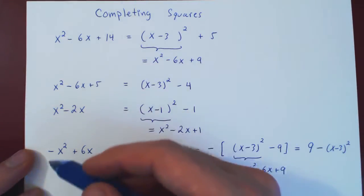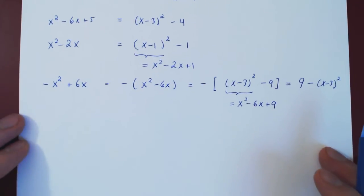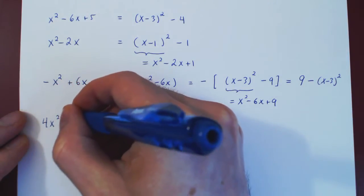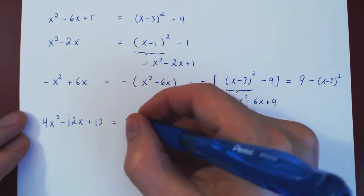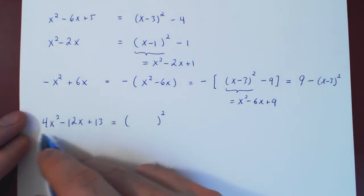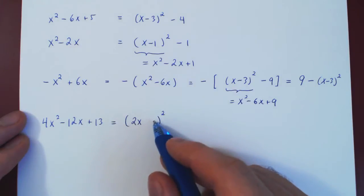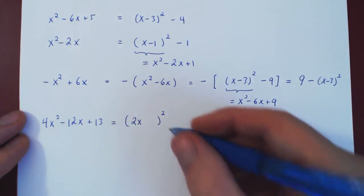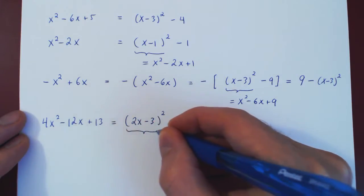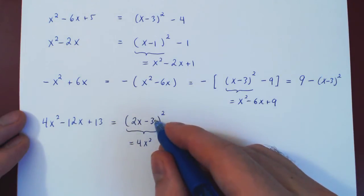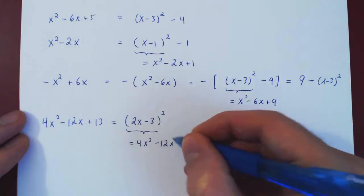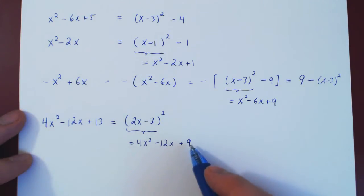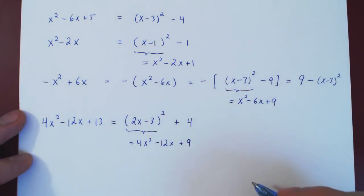So far we've only had 1 or negative 1 as the leading coefficient. What if we looked at 4x squared minus 12x plus 13? What squared gives us 4x squared? That's 2x. So every term here is multiplied by 2. Half of 12 is 6, and half of 6 is 3, so we go with negative 3, giving us 2x minus 3 squared. Expanding: 4x squared minus 12x plus 9. We're off by a constant — we add 4 to 9 to get 13. So the result is 2x minus 3 squared plus 4.